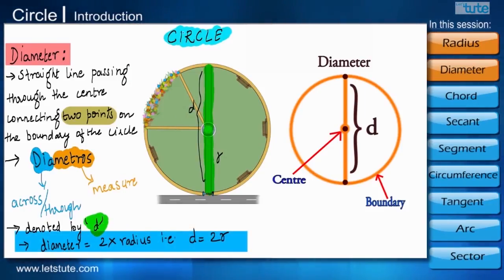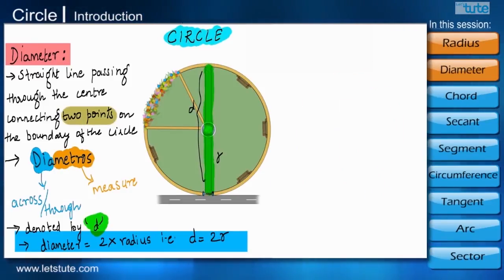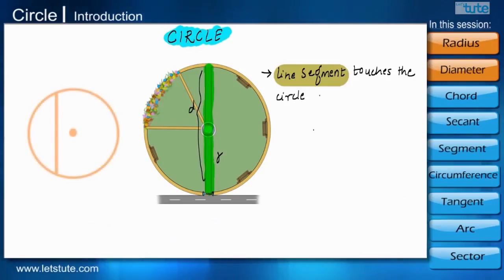As you can see that diameter touches the circle at two different points. Well, when any line segment which touches the circle at two different points, it is known as a chord of the circle.